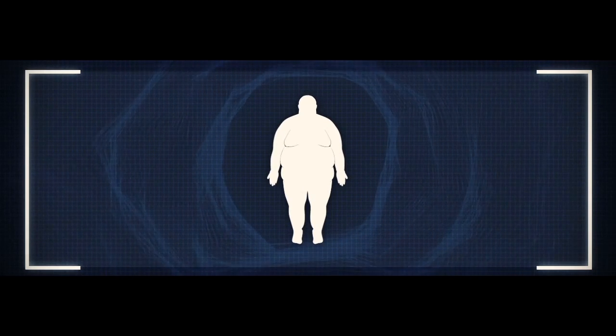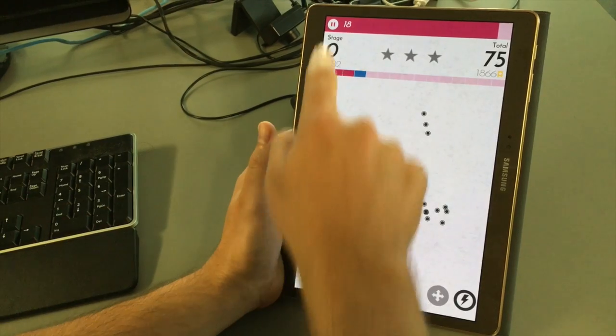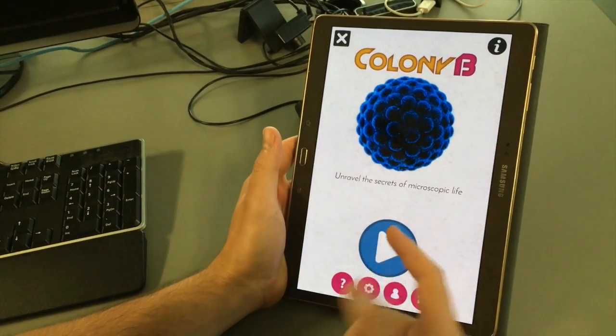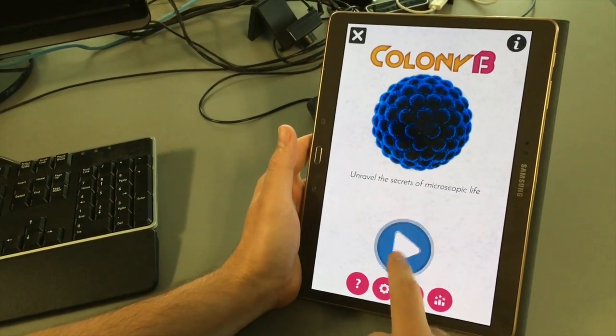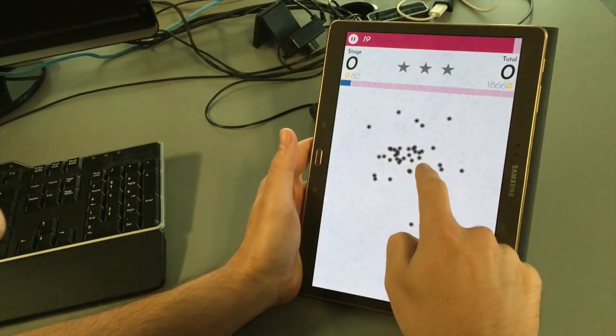That's where Colony B, a new game developed at McGill University, comes in. What people do as they play is make circles around clusters of dots that seem to be close to one another.